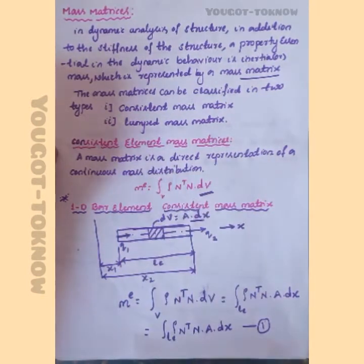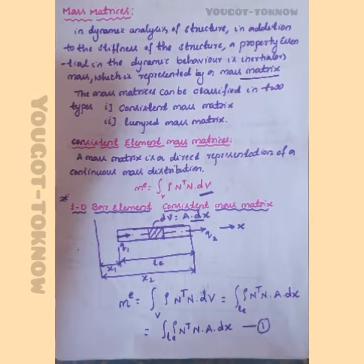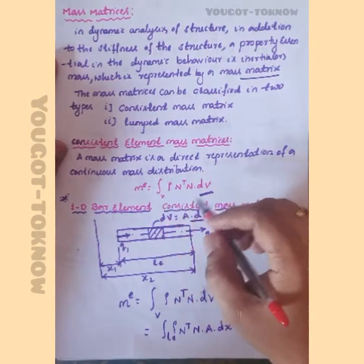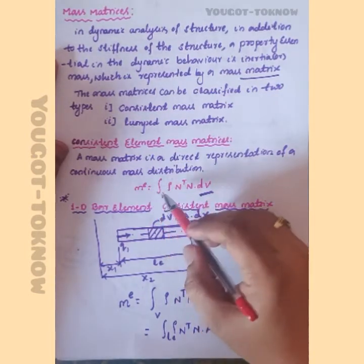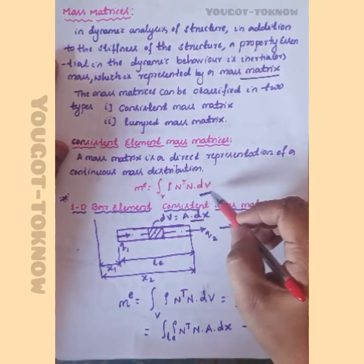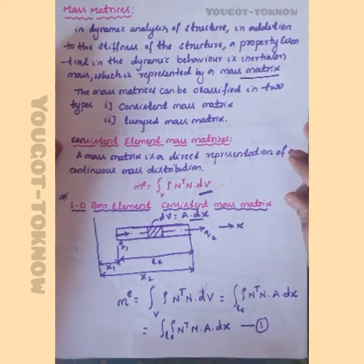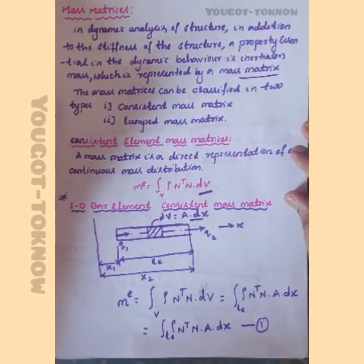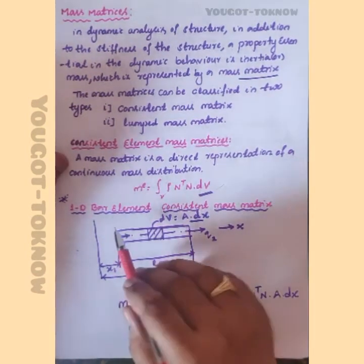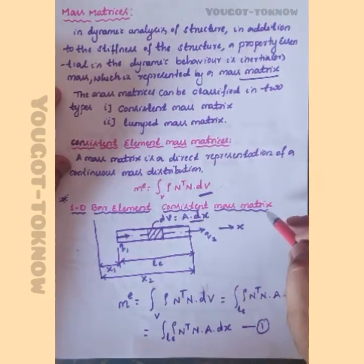The consistent mass matrix is a direct representation of a continuous mass distribution. We have already derived the basic expression for the mass matrix: M equals the volume integral of rho times N-transpose times N times dV. Now we will apply this to the first basic element in FEM — the 1D bar element.